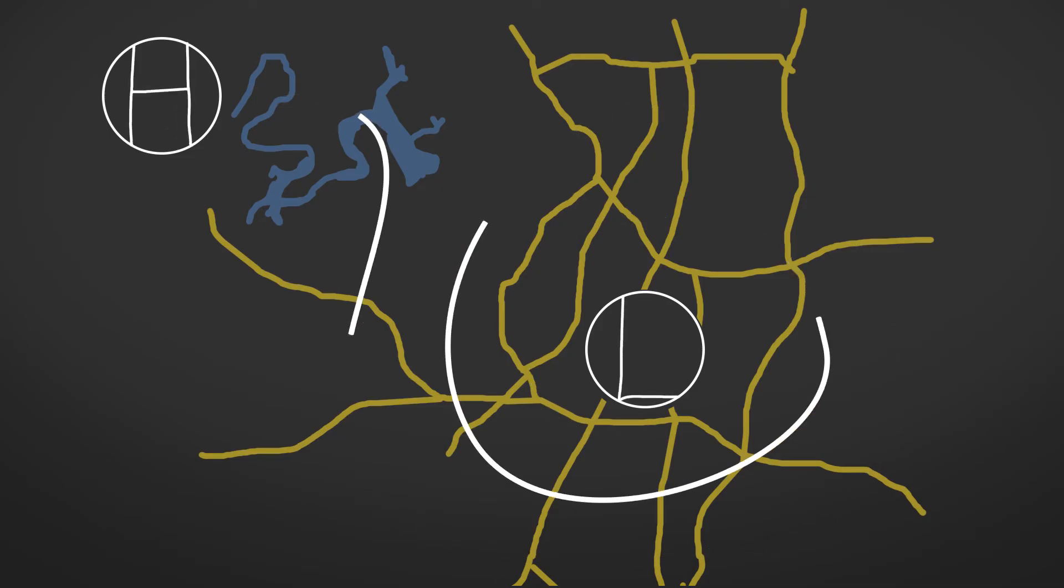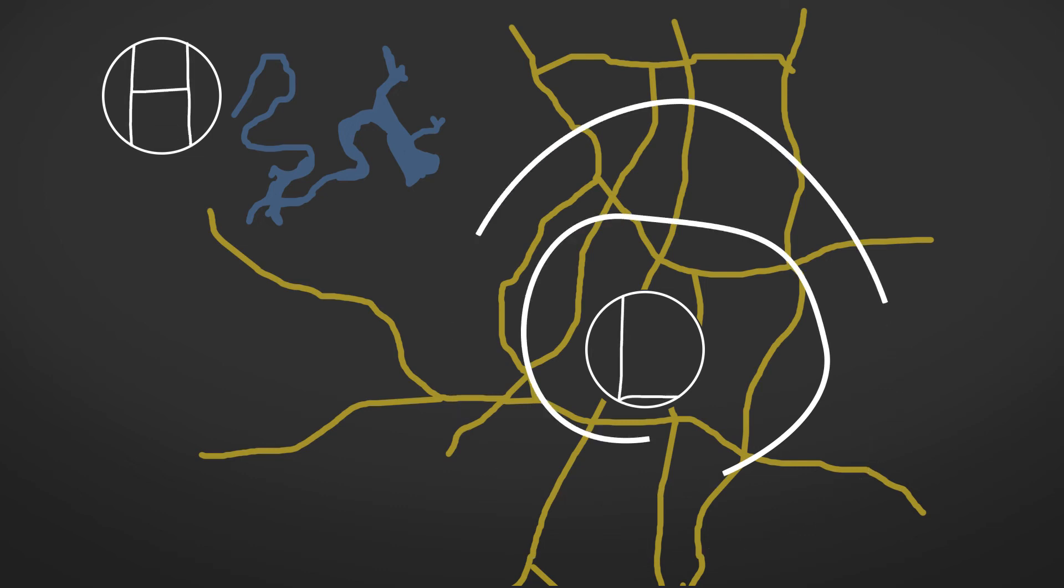The air ends up spiraling inward toward the center of the low pressure which is how we end up with these counterclockwise rotating storms.